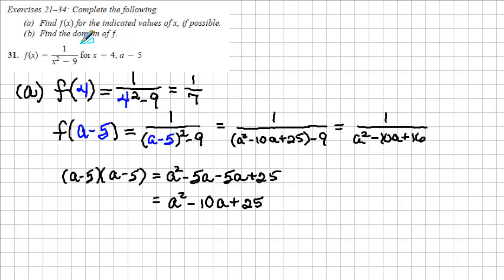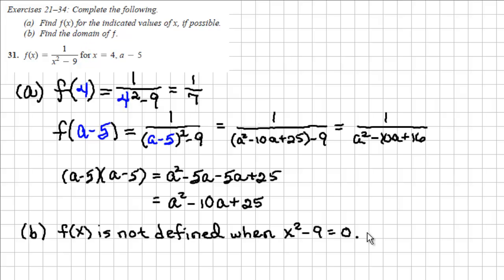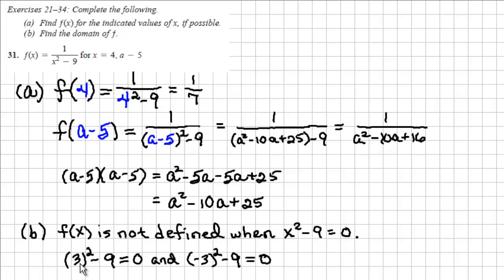In this case, 1 over the square of x minus 9 is a fraction. Fractions are undefined when their denominators are equal to 0. So we need to think: what are the values of x that would cause x squared minus 9 to equal 0? By inspection, x squared minus 9 equals 0 when x is equal to 3 or negative 3, since the square of 3 is 9 and 9 minus 9 is 0.